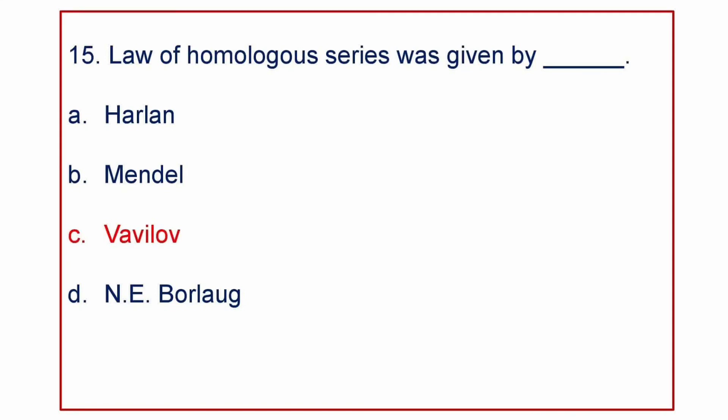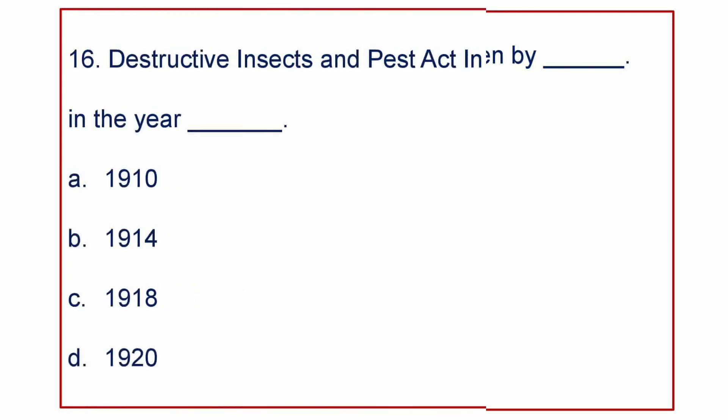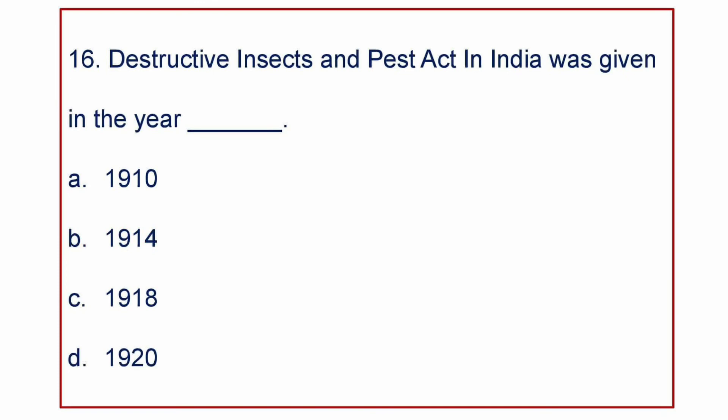This is one of the most common questions in all competitive examinations. Read the question carefully and type the correct answer in the comment section. The Destructive Insects and Pests Act in India was given in the year — A) 1910, B) 1914, C) 1918, or D) 1920.